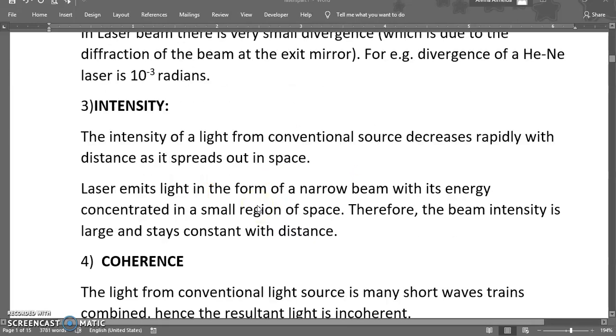Next is the intensity. The intensity of light from a conventional source decreases very rapidly with distance as it spreads out in space. Whereas a laser emits light in the form of a narrow beam with its energy concentrated in small region of space. Therefore the beam intensity is very large and stays constant with distance.